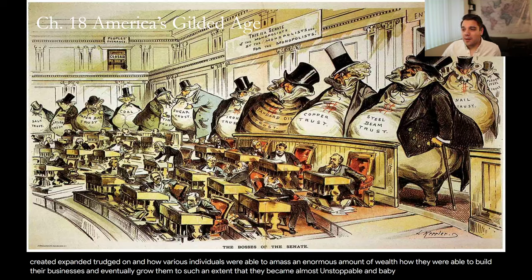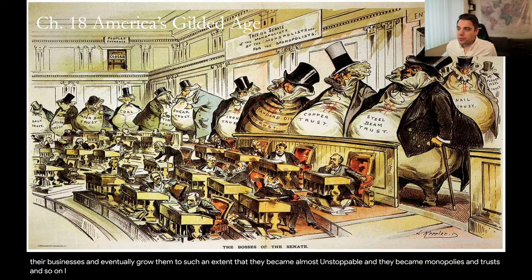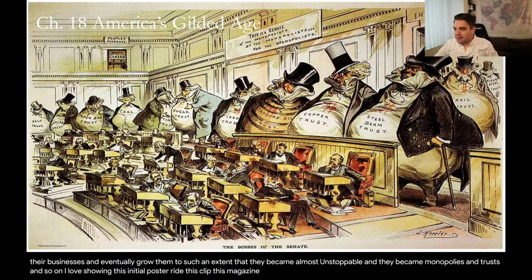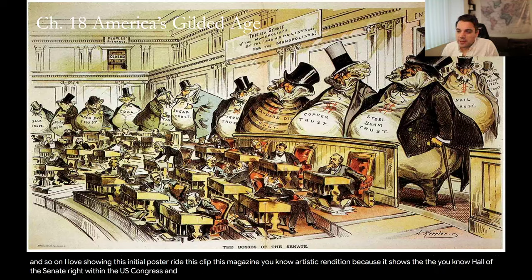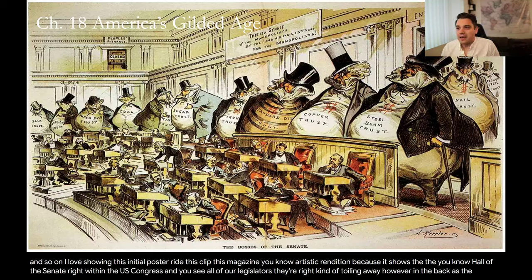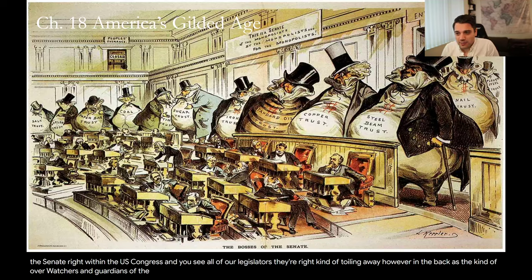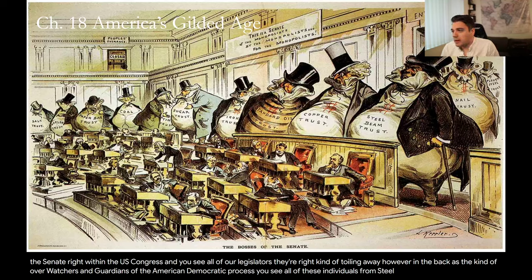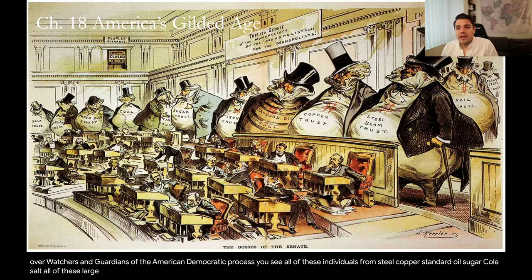They became monopolies and trusts and so on. I love showing this initial magazine artistic rendition because it shows the Hall of the Senate within the U.S. Congress. You see all of our legislators there, toiling away. However, in the back, as the overwatchers and guardians of the American democratic process, you see individuals from steel, copper, standard oil, sugar, coal, and salt — all of these large industries — and these men are being portrayed as large sacks of money.